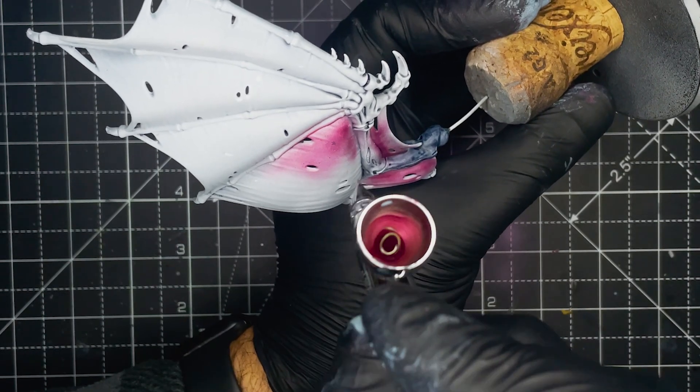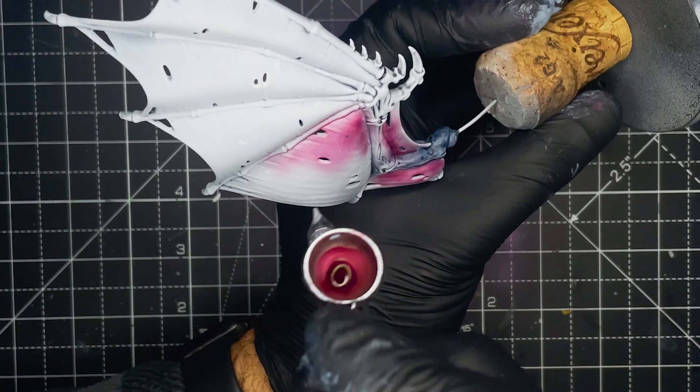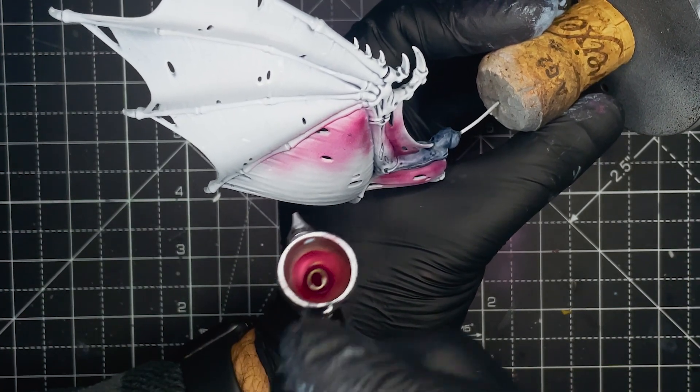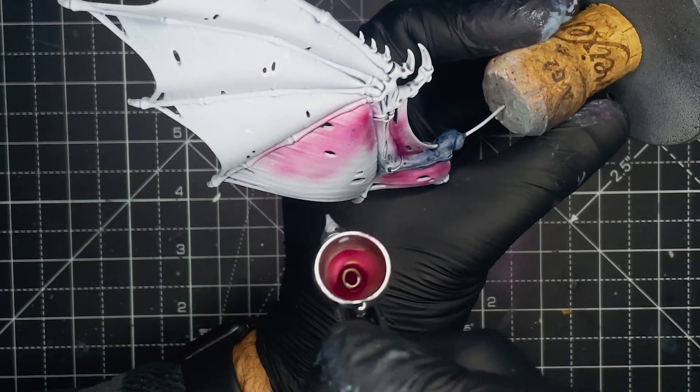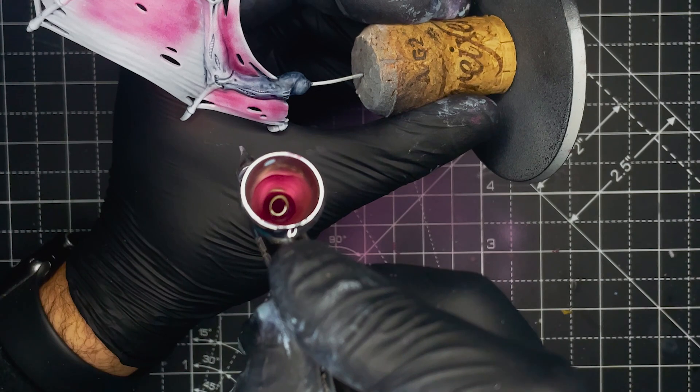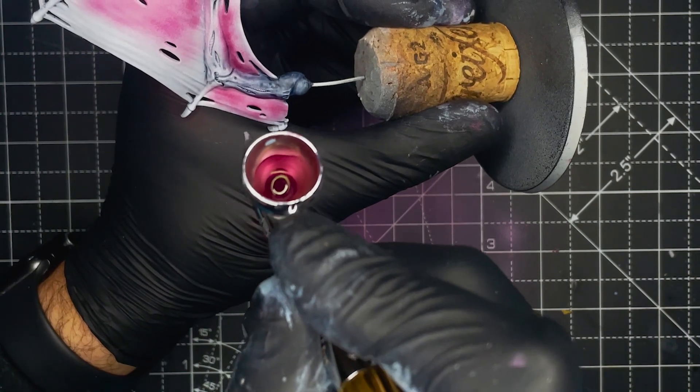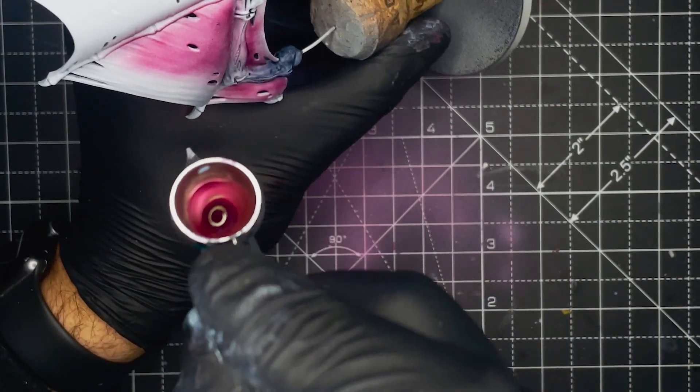Contrast paints work absolutely fantastic out of an airbrush. The consistency is absolutely perfect and there's no need to add any thinners at all. Just go straight out of the pot and I always find it gives a really nice smooth coverage. So much so that I may try and use more contrast paints through the airbrush rather than standard paints that need a lot of thinning.